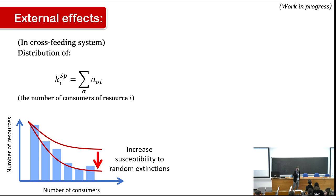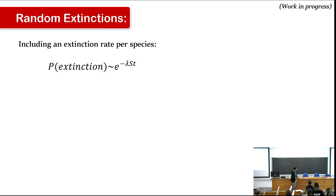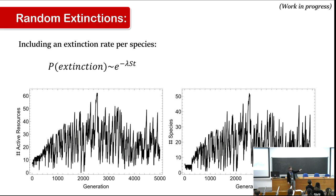We can also study fragility of the cross-feeding system to random environmental events. Many species each consume only one resource; if a random species goes extinct, all downstream resources in the cross-feeding chain stop being produced. Simulations show that after randomly extinguishing a species, the number of active resources and strains more or less reaches something constant — though this is still work in progress.